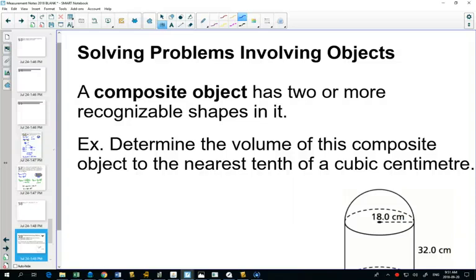Today, we are going to solve surface area and volume problems with composite objects. A composite object is two or more shapes that you know stuck together.